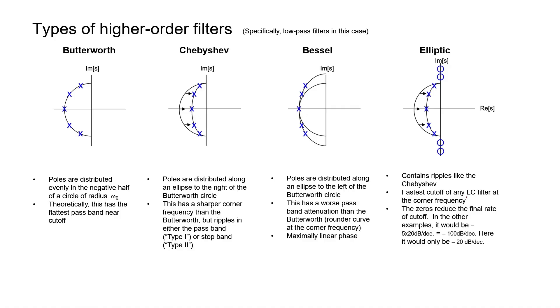There are different types of higher-order filters depending on the frequency response. The usual engineering application is to have all poles acting together to improve the shape of the filter's frequency response. The main types are Butterworth, Chebyshev, Bessel, and elliptic filters. The poles are arranged slightly differently for each type. In pole-zero diagrams, Butterworth, Chebyshev, and Bessel filters have no zeros, while elliptic filters do have zeros. A five-pole Butterworth filter has its poles in slightly different positions than a five-pole Chebyshev or Bessel filter, which results in slightly different frequency responses.